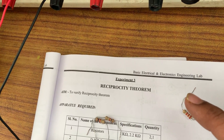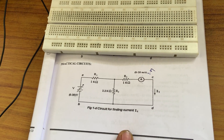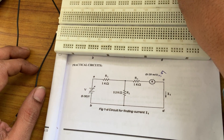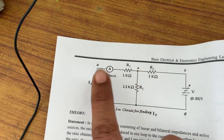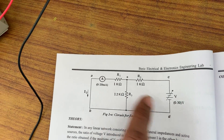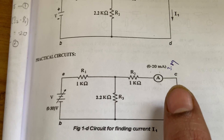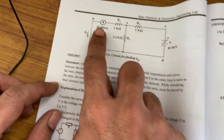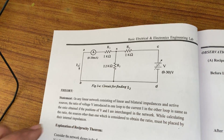Today we are going to discuss the reciprocity theorem. In the case of the reciprocity theorem, before and after interchanging the sources, the response must be the same. The current i1 must be equal to i2 — before and after interchanging the sources, the response must be equal. That is what we need to verify.